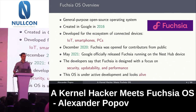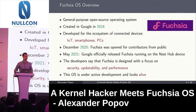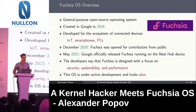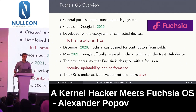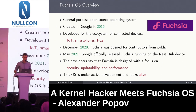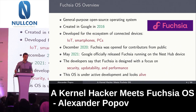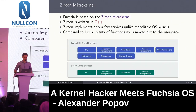Fuchsia is a general purpose open source operating system. It was created at Google approximately six years ago, and it is mainly developed for IoT, smartphones, PCs — the ecosystem of connected devices. In December 2020, Google decided to open Fuchsia for contributors not only from Google. Later, they officially released Fuchsia as the operating system of their Nest Hub device, which is the device that controls a smart home. This operating system is under active development, and security is one of the goals of Fuchsia developers.